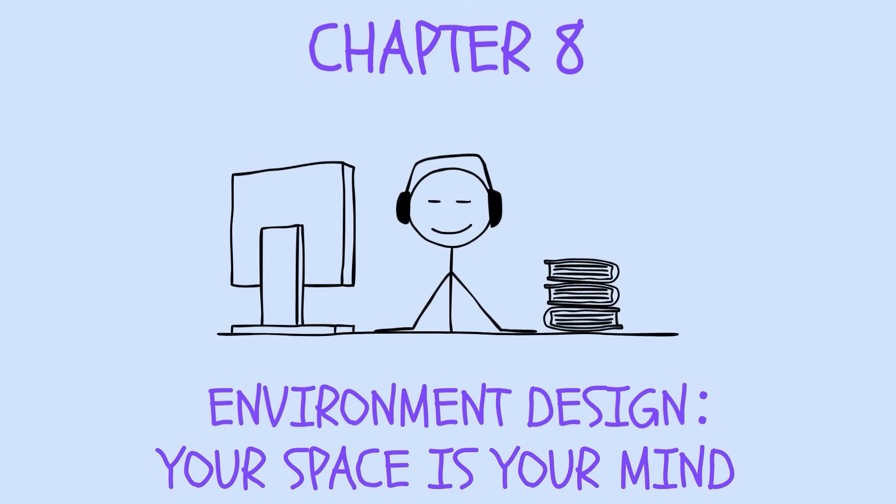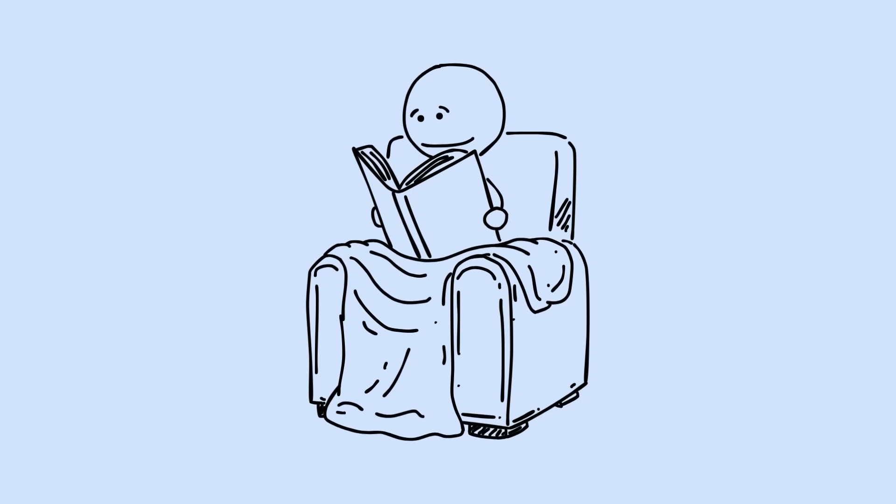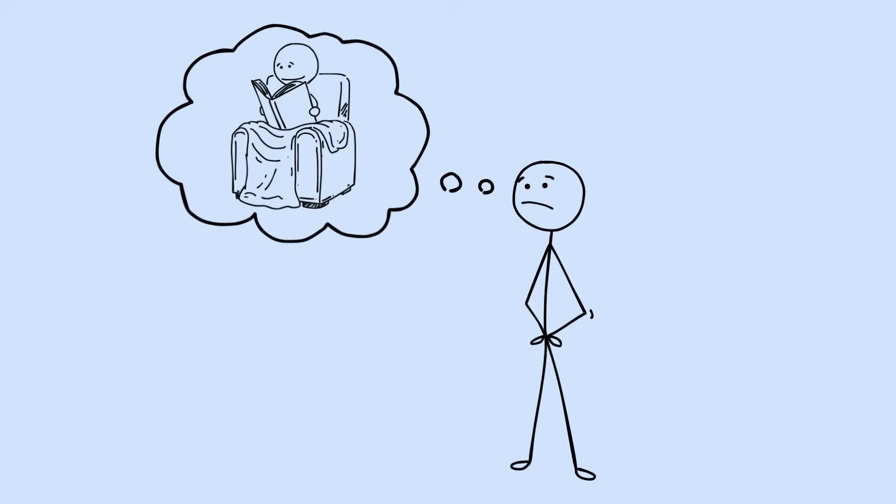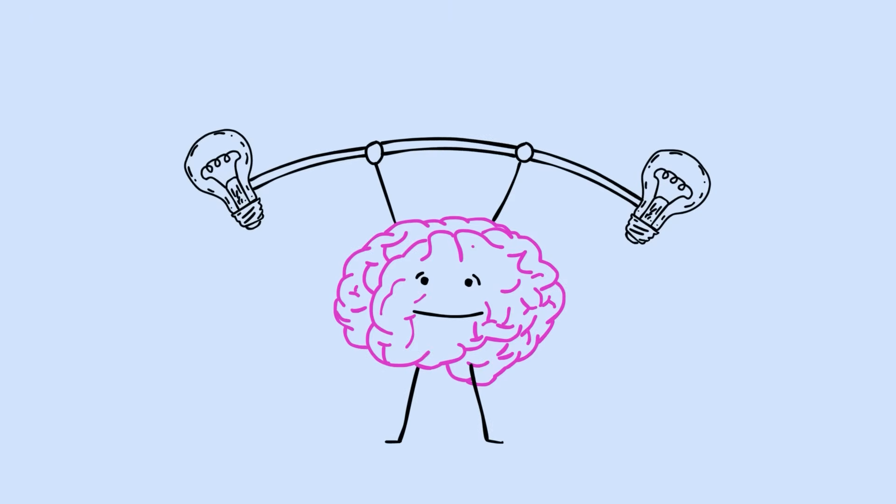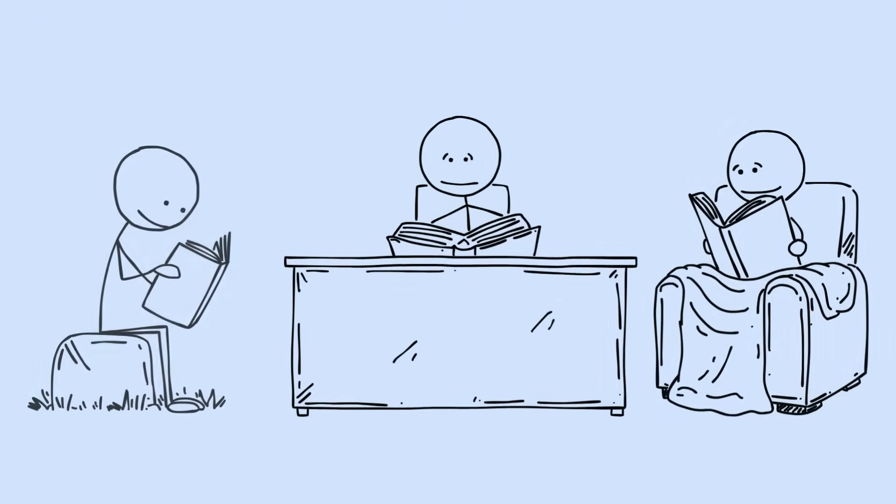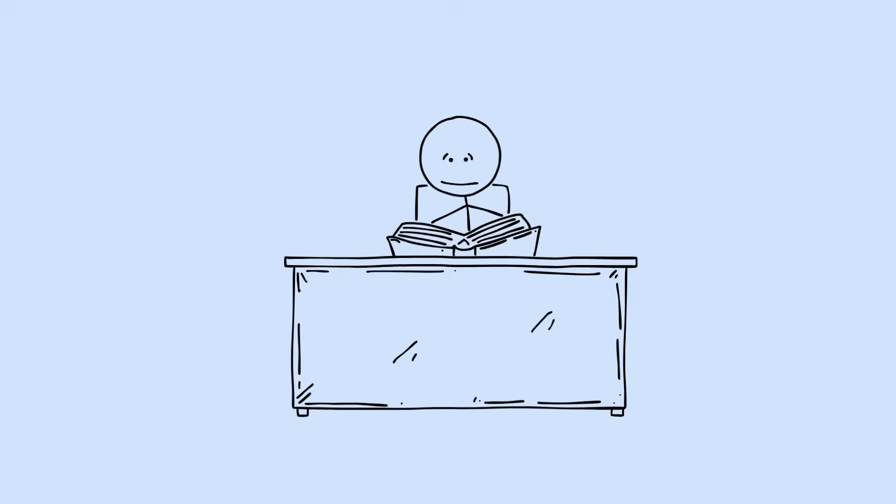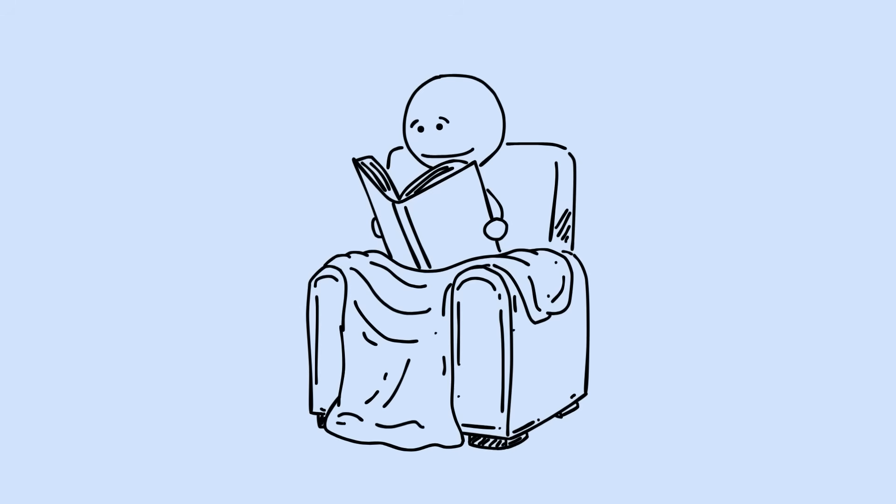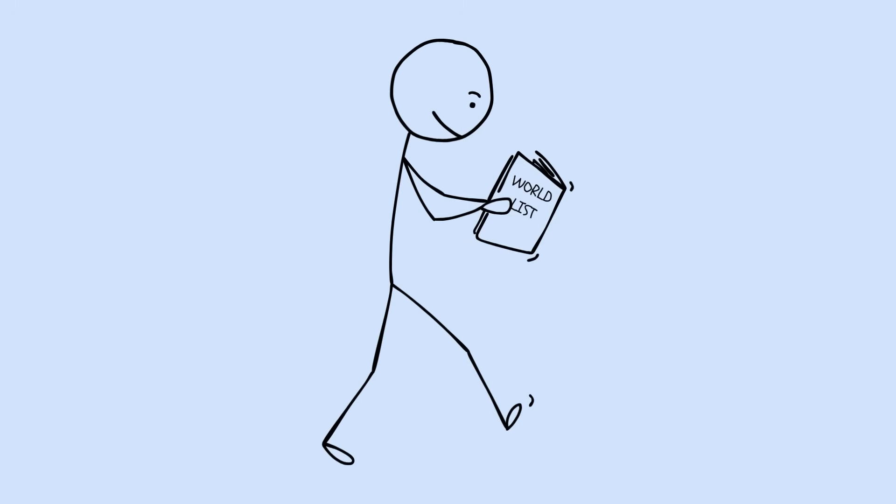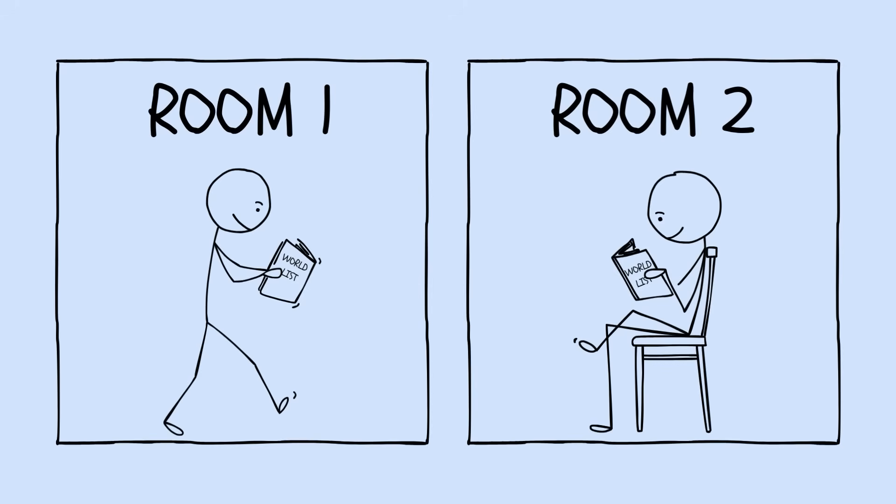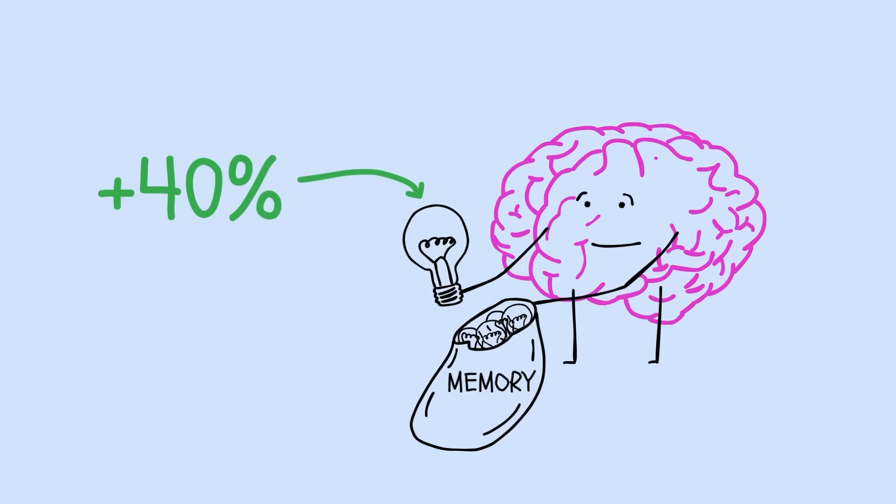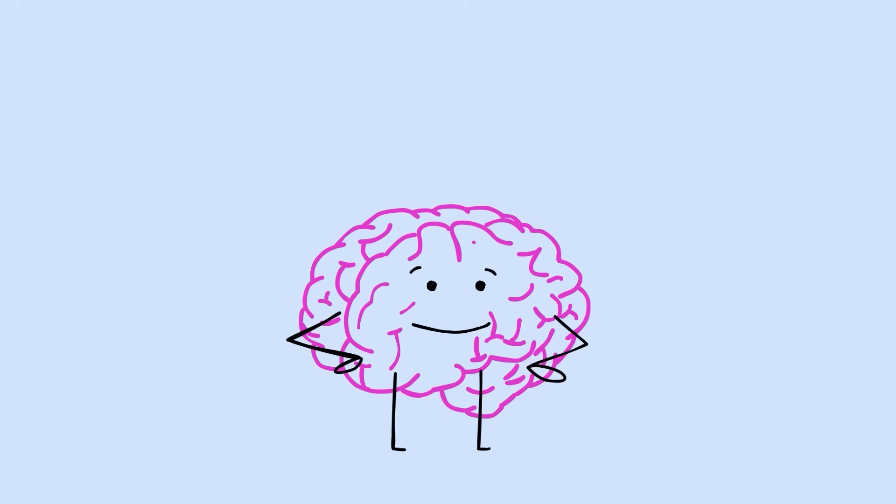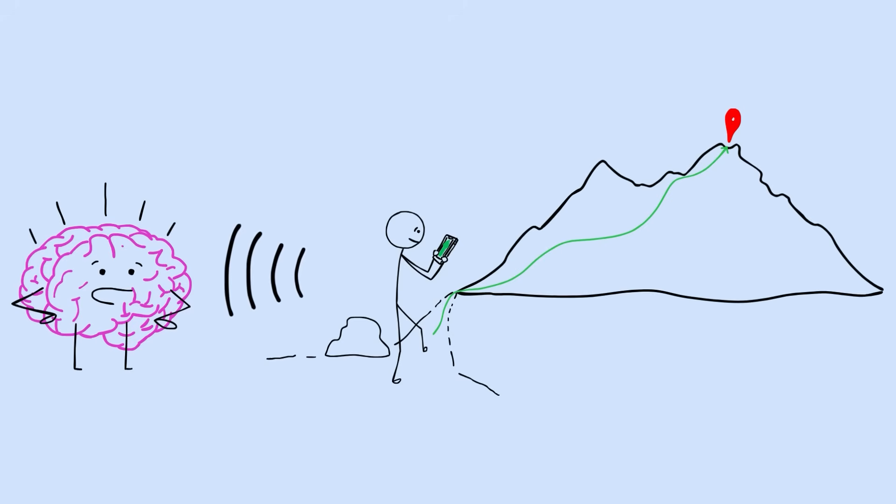Chapter 8. Environment Design. Your space is your mind. Your study spot has more influence than your study buddy, and most people never even think about it. This will surprise you. Your brain creates stronger memories when you study in multiple locations than when you stick to one perfect spot. Context-dependent learning means your environment becomes part of the memory. Students who studied word lists in two different rooms remembered 40% more than those who studied in one room twice. Your brain uses location as a memory cue.